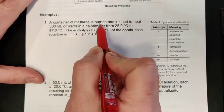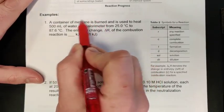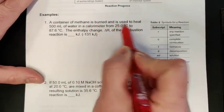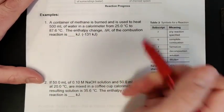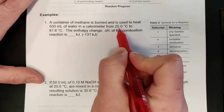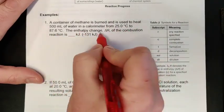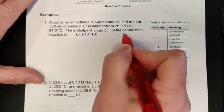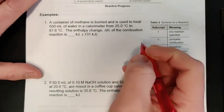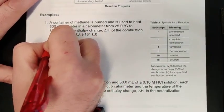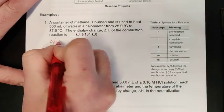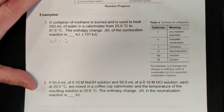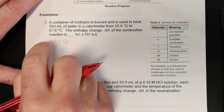Let's take a look at some of these examples. Here we have a container of methane that is burned, and this combustion of methane is being used to heat up 500 mL of water in a calorimeter. The water increases from 25°C to 87.6°C. I want to know what is the enthalpy change because of the combustion reaction of methane.